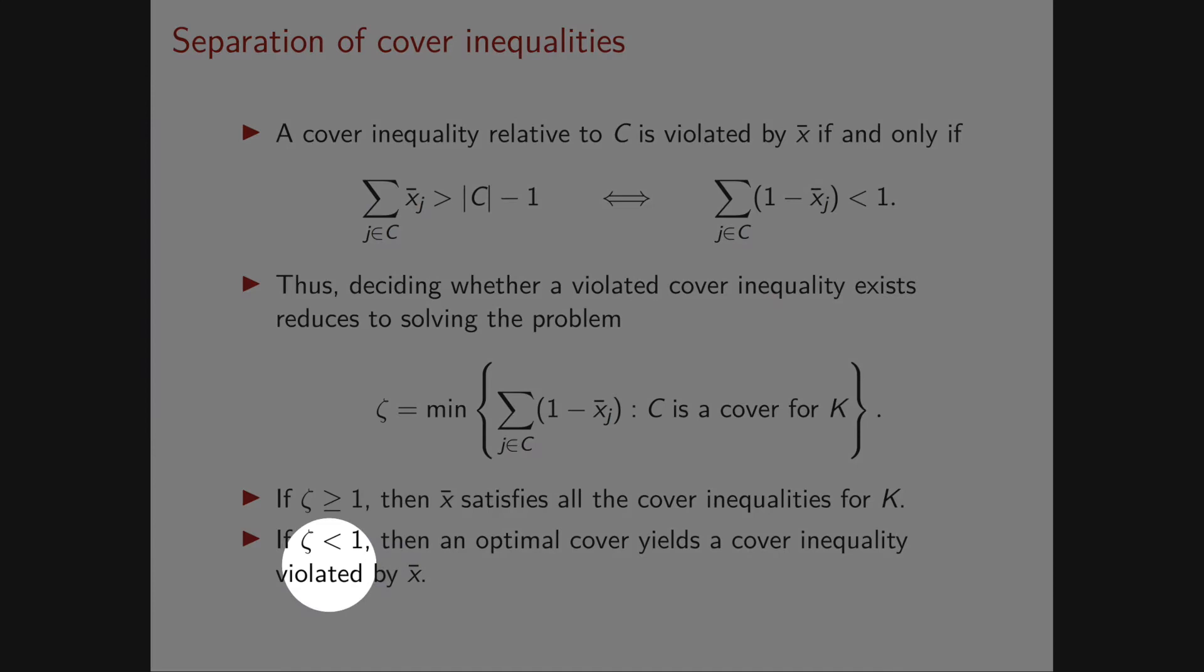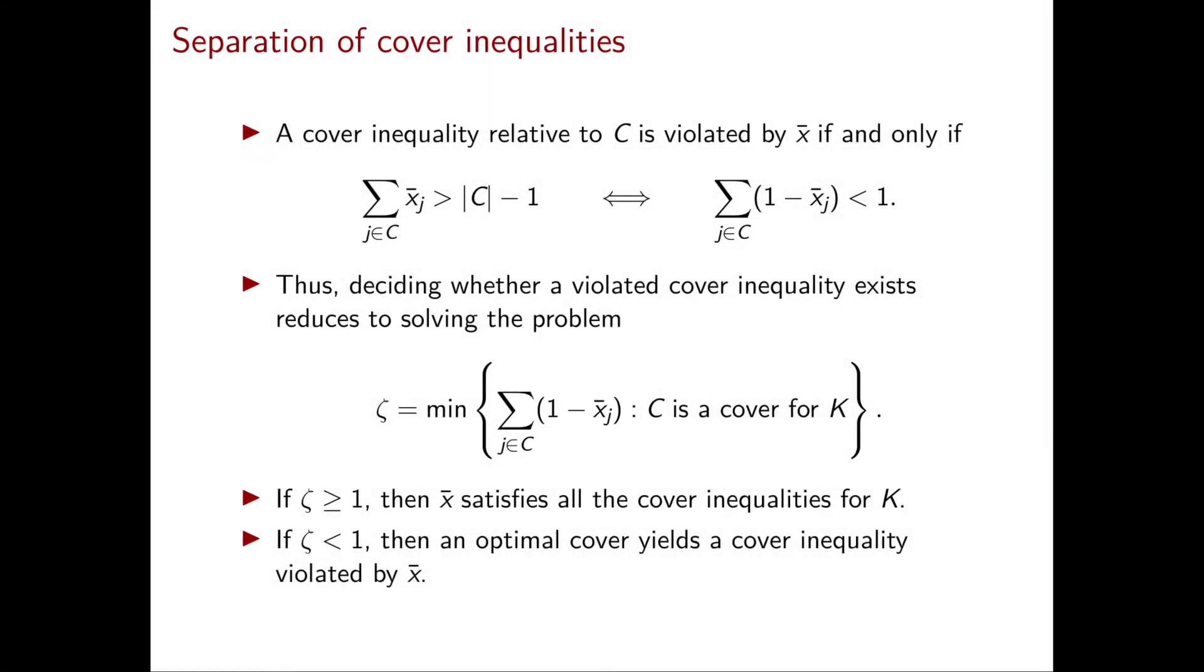On the other hand, if ζ is strictly smaller than 1, then look at the cover C that gives you exactly this minimum. For this specific cover, we have that this sum is strictly smaller than 1. So this optimal cover gives you a cover inequality violated by x̄.